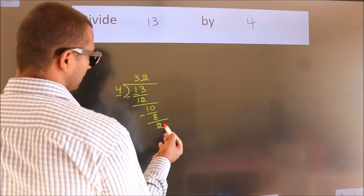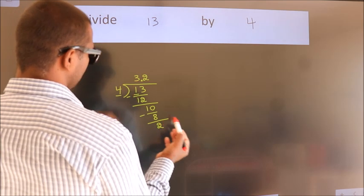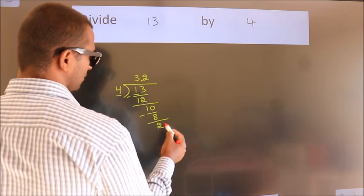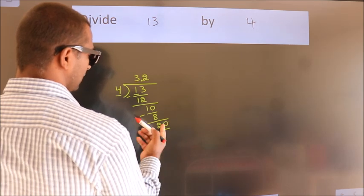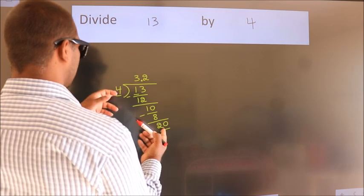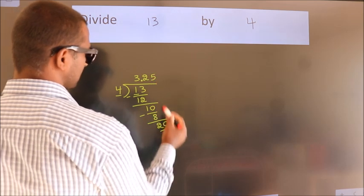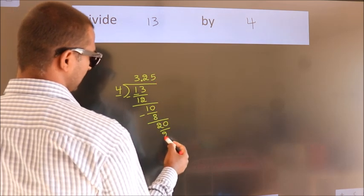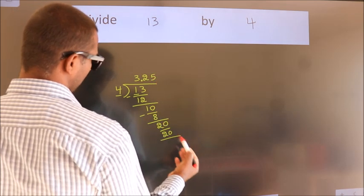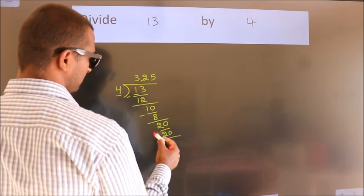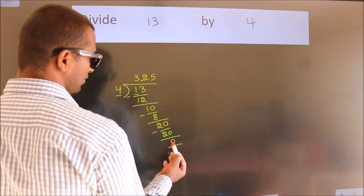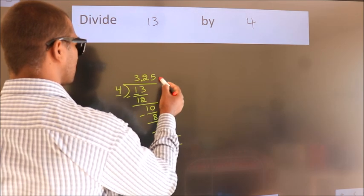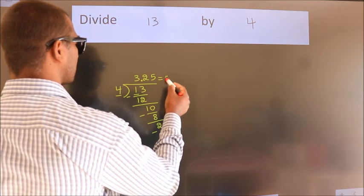After this, we already have the decimal, so directly take 0, making it 20. In the 4 times table, 4 fives is 20. Now we subtract and we get 0. We got remainder 0, so this is our quotient.